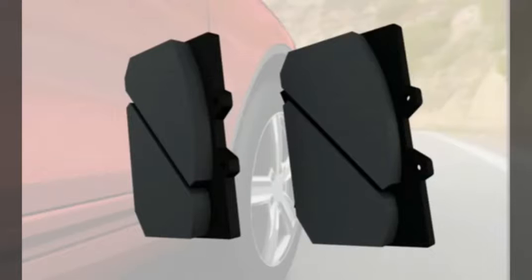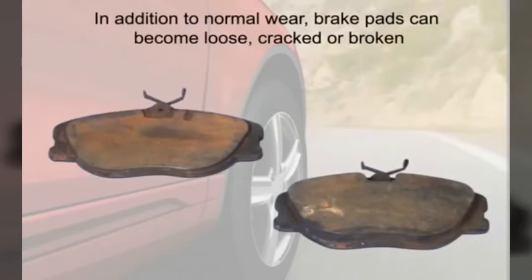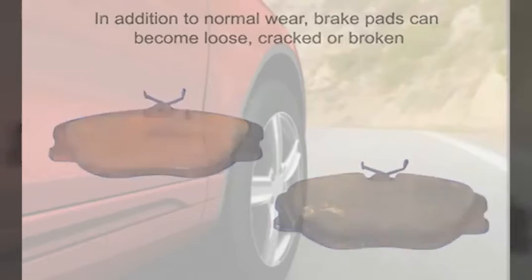Brake pads are made up of fibrous material that gradually wears away each time you apply your brakes. The rotors are metal discs which also wear, but at a slower rate. In addition to normal wear, brake pads can become loose, cracked, or broken, and disc rotors can become grooved, pitted, or warped.